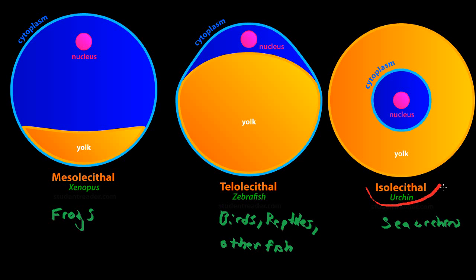Notice in isolecithal, this one right here, the yolk is more generally evenly distributed all around the egg. While in telolecithal eggs, the yolk is in a high abundance but it's polar. It's near some point on the egg. It's not evenly distributed. And notice that on mesolecithal eggs, these are the main distinguishing points between these three types of eggs.